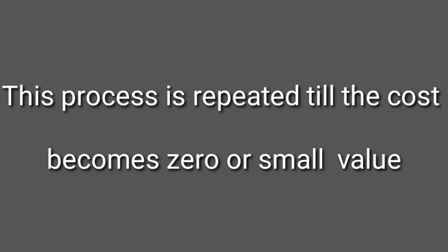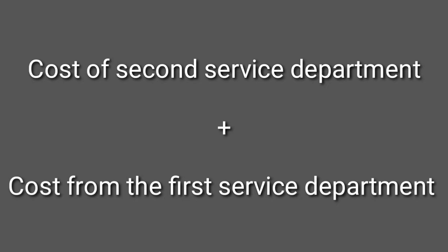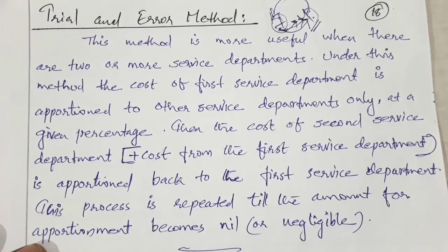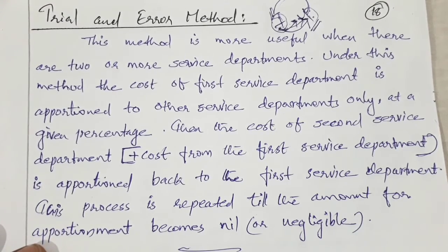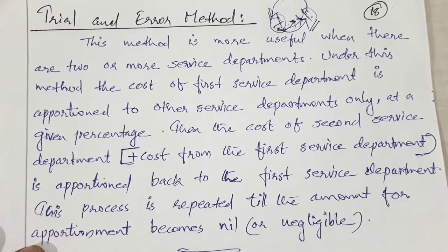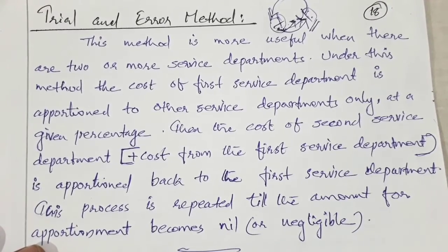The cost of the second service department to be apportioned to the first service department is calculated as: second service department overhead cost plus cost received from the first service department. We continue this process — distributing from the first to the second and back — until the overhead cost becomes zero. That is what the Trial and Error Method requires us to do.